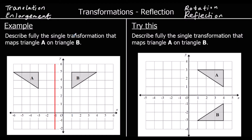If you take any point — any corner — any point on shape A and look at how far you've got to go to get to the mirror line. So if you go two away to the mirror line, for shape B it would be two away on the other side. So these red points are both two away from the mirror line.